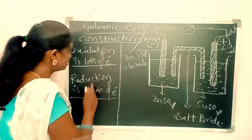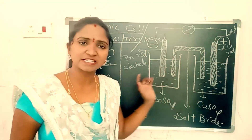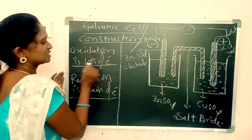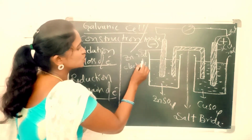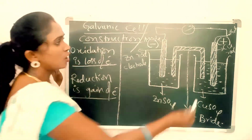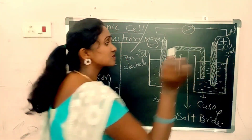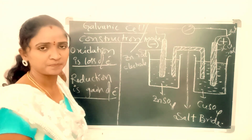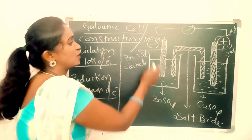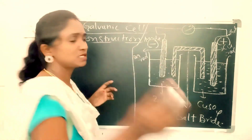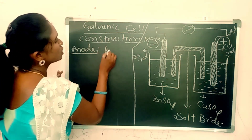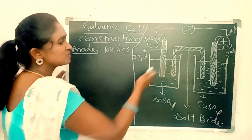If we remember these two terms we can understand the reactions between the two half cells. Zinc electrode acts as anode and undergoes oxidation. Copper electrode acts as cathode and undergoes reduction. Now let's see what happens at the anode — loss of electrons takes place.